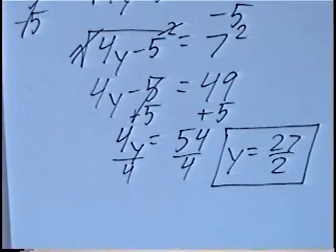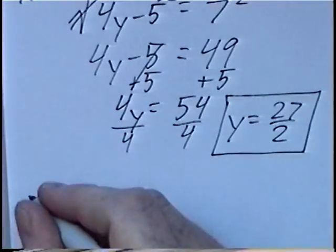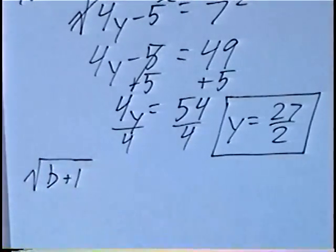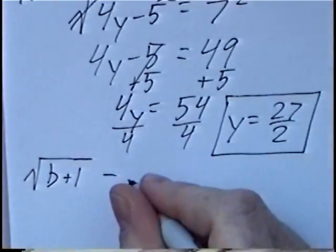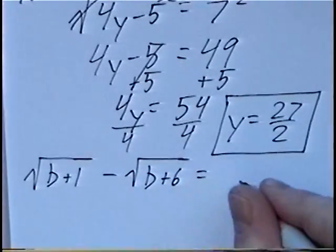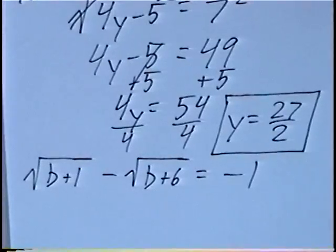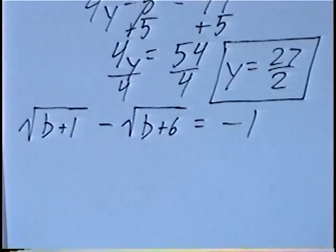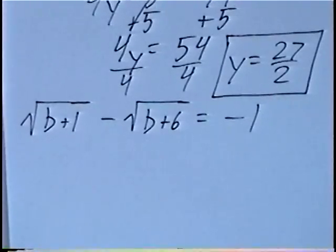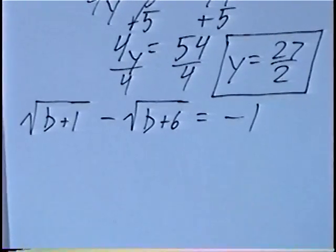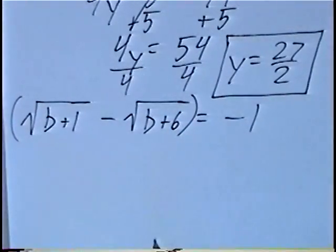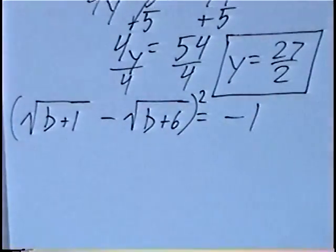Second and last question for the section: radical of b plus 1 minus a second radical of b plus 6 equals negative 1. Solving this, we have two radicals on the same side with no other number to subtract to isolate a single radical. So what we can do with both radicals on the same side is square the entire equation, squaring both sides.